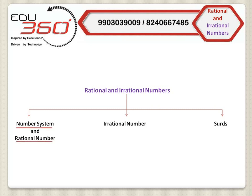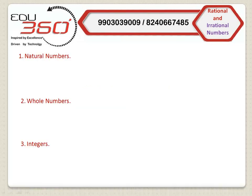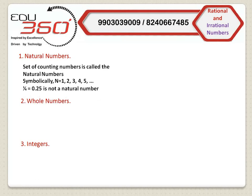Basically, this part is a revision of your previous classes. Let me first discuss three important concepts of number systems: natural numbers, whole numbers, and integers. We can define natural numbers as the set of all counting numbers. If we denote this set by N, we can say that set N includes 1 to plus infinity, excluding any fractions or decimal points. For example, 1 by 4, that is 0.25, is not a natural number.